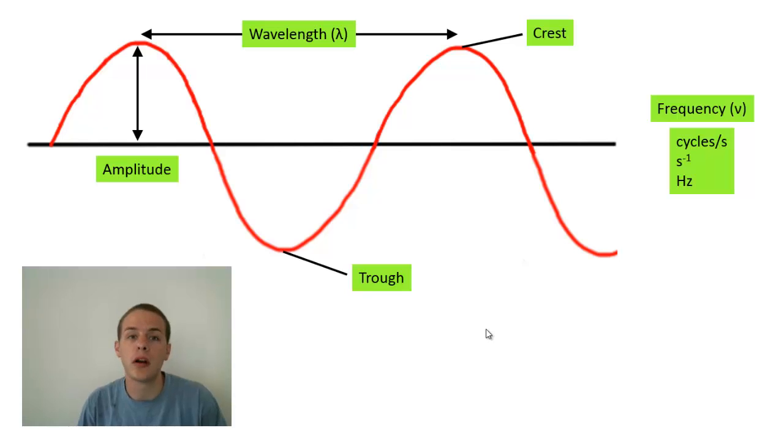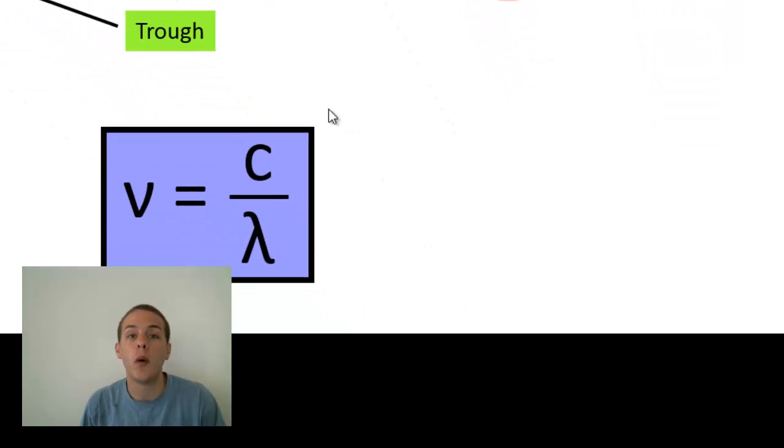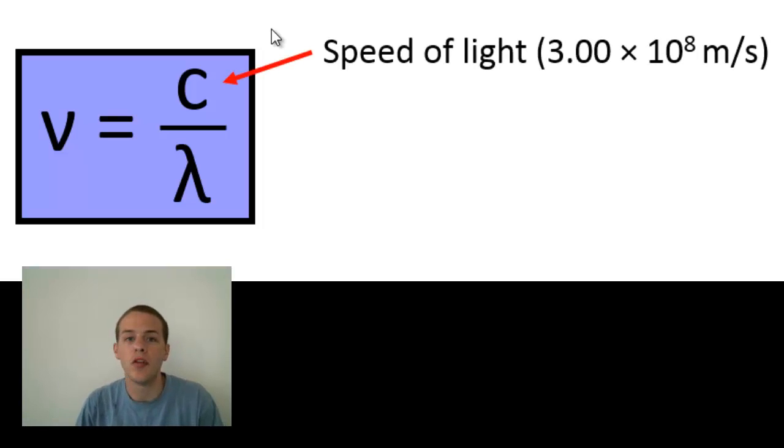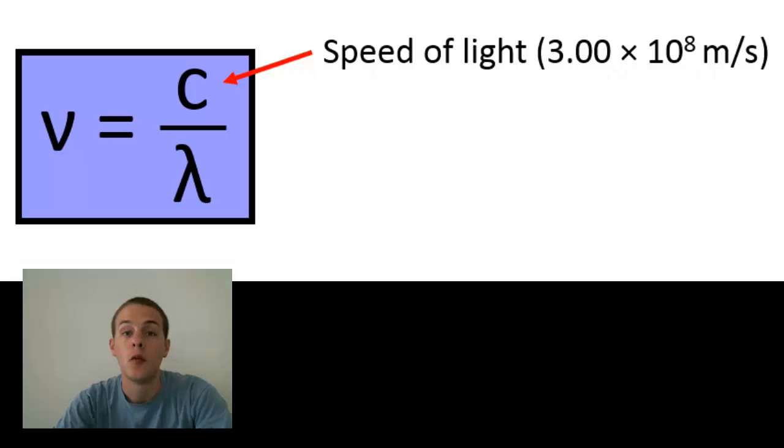And wavelength and frequency are going to be related by this equation, where we have nu equals c over lambda. So the nu again, that's the frequency, the lambda, that's the wavelength, and this letter c is the speed of light, which is always constant. So no matter what type of light it is, it's always going to be traveling at the same speed, which in a vacuum is, again, 3.00 times 10 to the 8 meters per second. So because we can convert so easily between wavelength and frequency, wavelength and frequency are just two ways of expressing the same information.